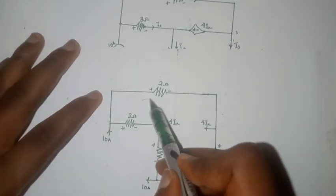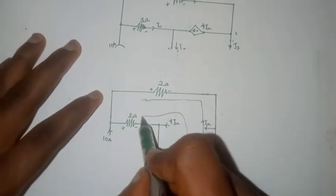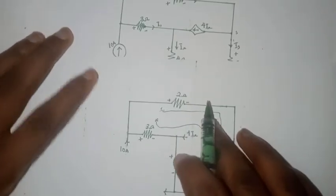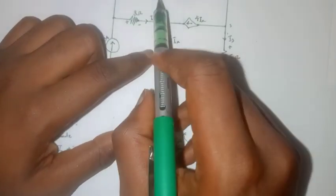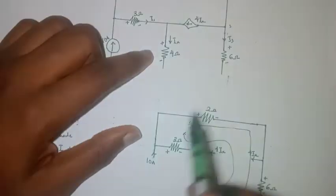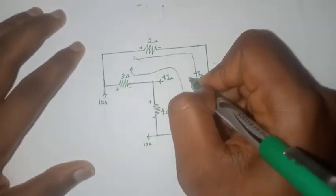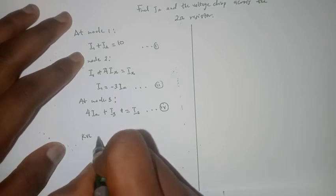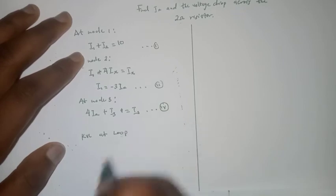So if you look at it this way, it becomes easier for us to see a loop which we can use to write our KVL equation. So we can just write the KVL equation like this, and then we have the last equation that we are looking for.